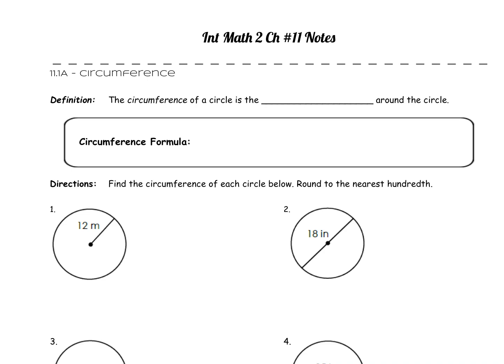The very first thing we've got to talk about is the actual definition of circumference. What is circumference? The circumference of a circle is the distance around the circle. Circumference is just the distance around the circle.